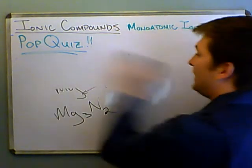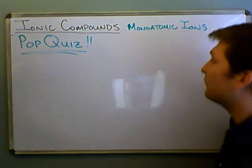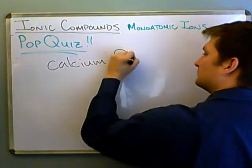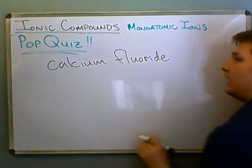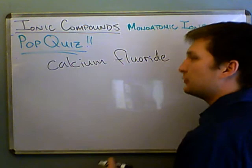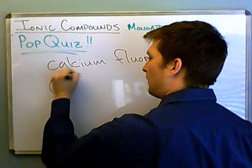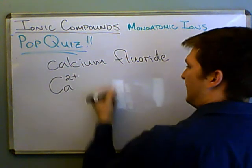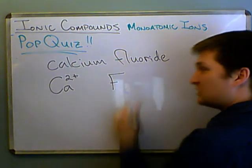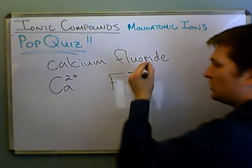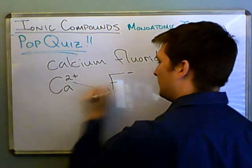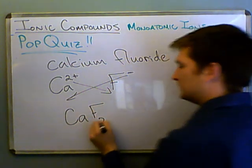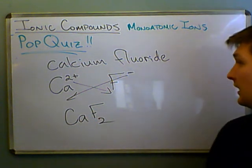Finally, number six was calcium fluoride. Both of these are predictable. Calcium is in group 2A, so it's two plus. Fluoride is in group 7A — it's one of the halogens, it always likes to have a one minus charge. If we cross those, we get CaF₂. And there you go, that's the answer to number six.